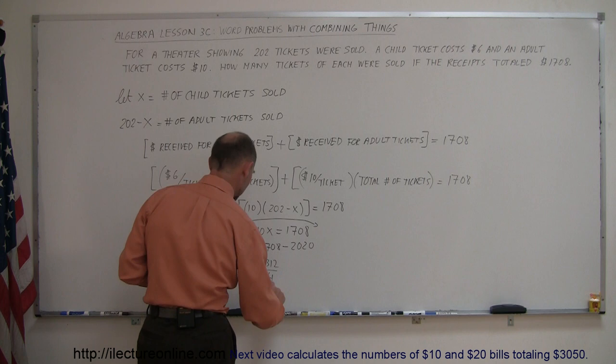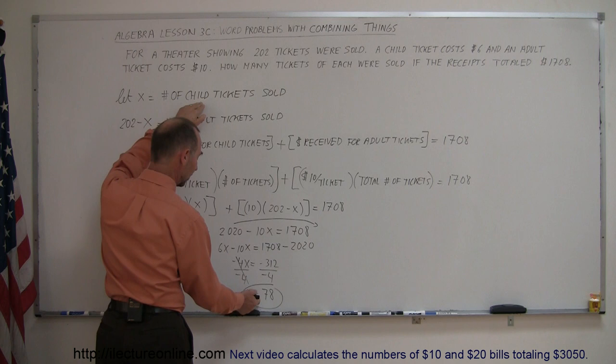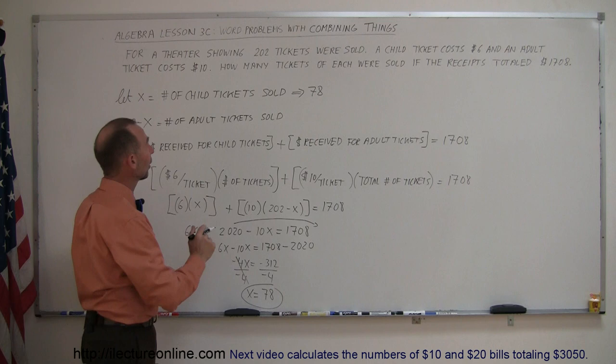What does that define? What is X defined as? It says X is equal to number of children's tickets. X equals 78, that means we sold 78 children's tickets, and if the total was 202, we subtract 78 from that. That means 124 adult tickets were sold.